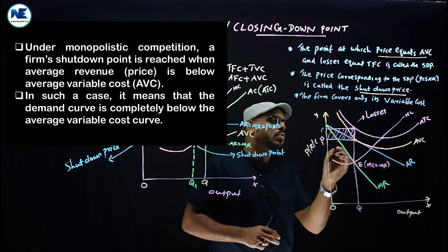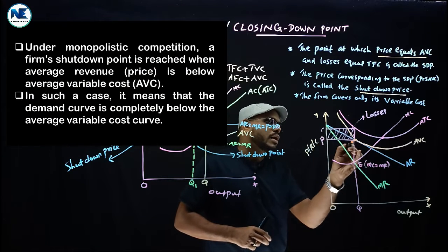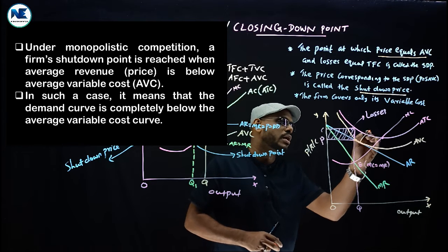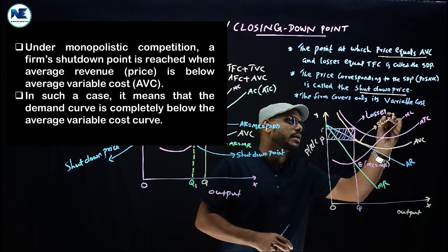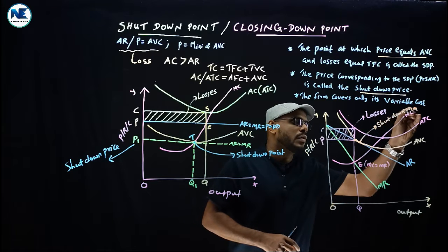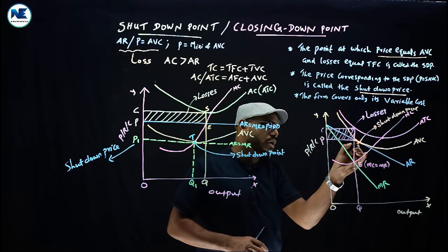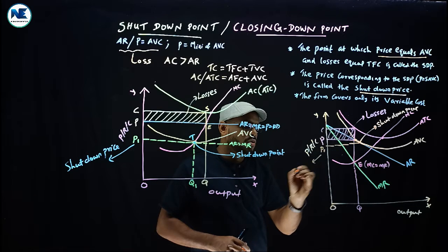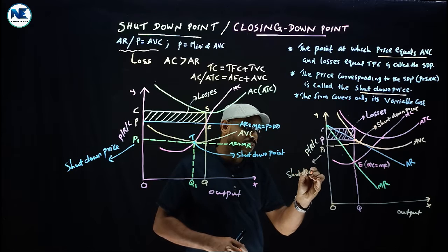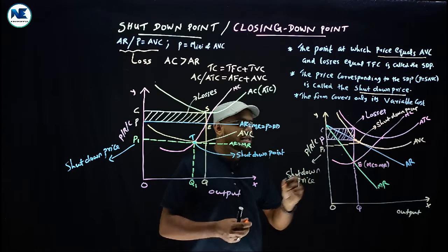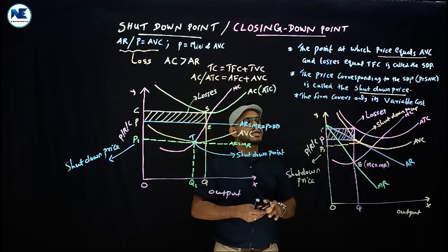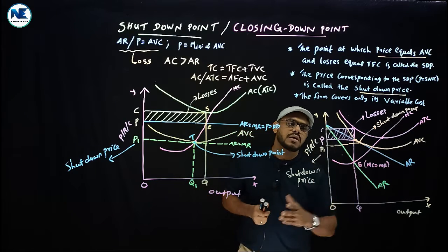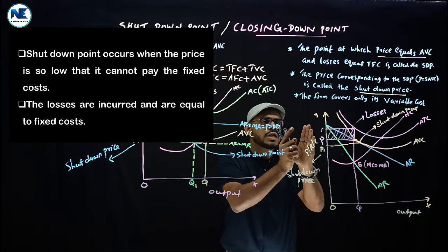At the shutdown point, the average revenue covers only average variable cost. This is the shutdown point, with shutdown price P1.